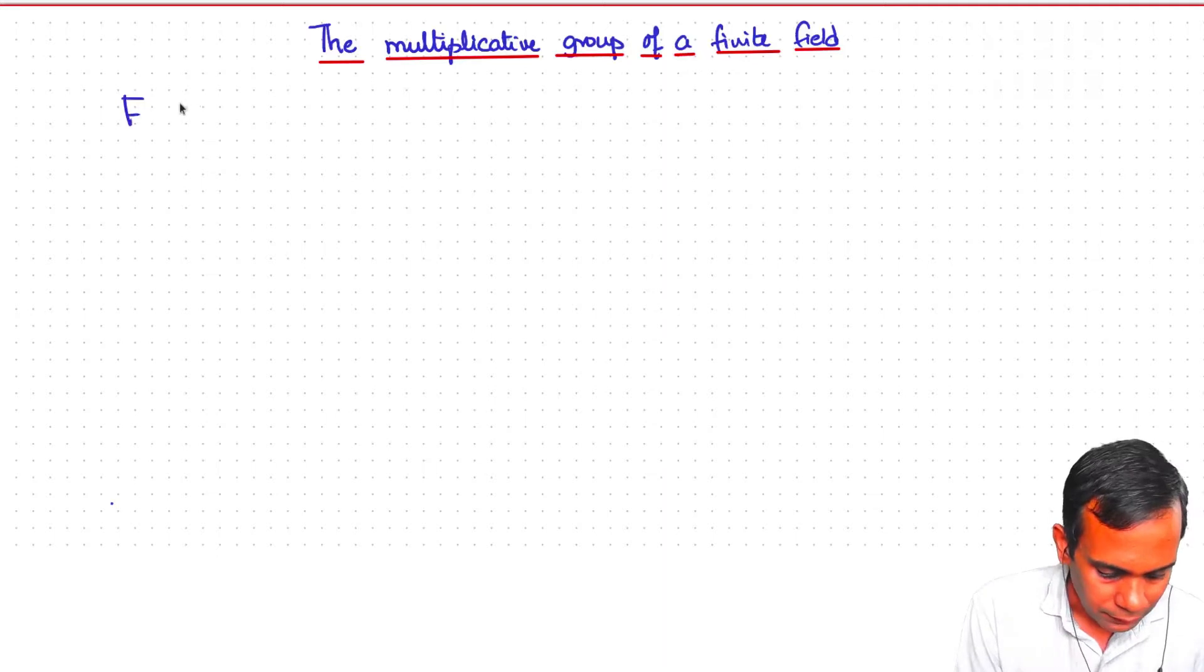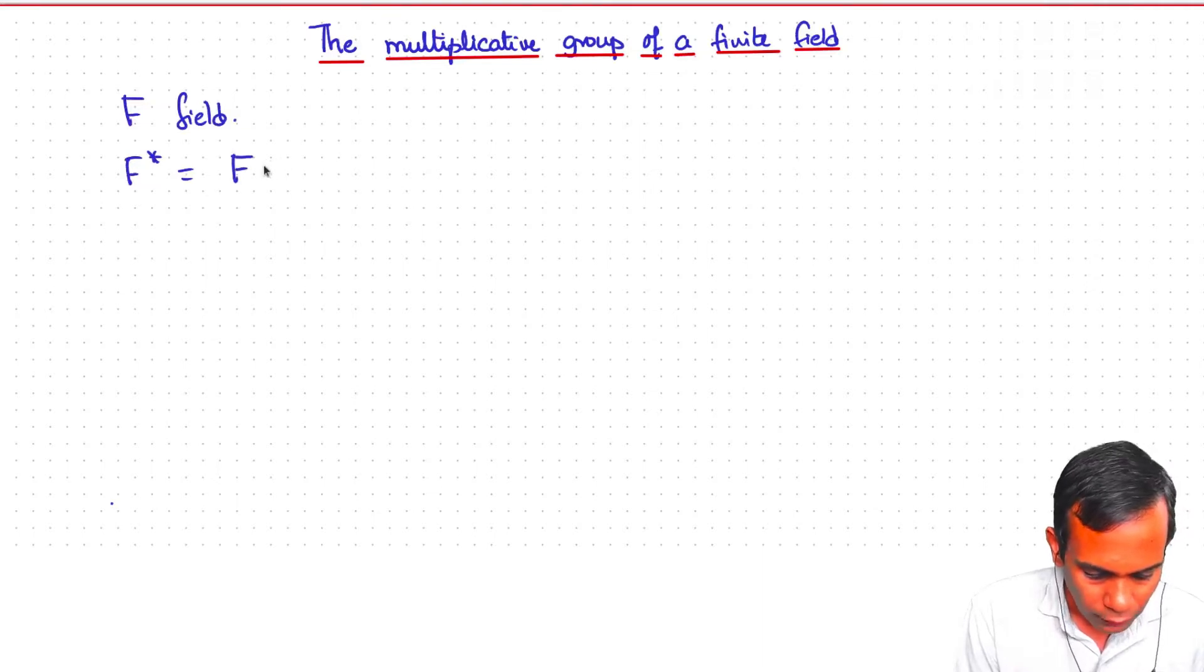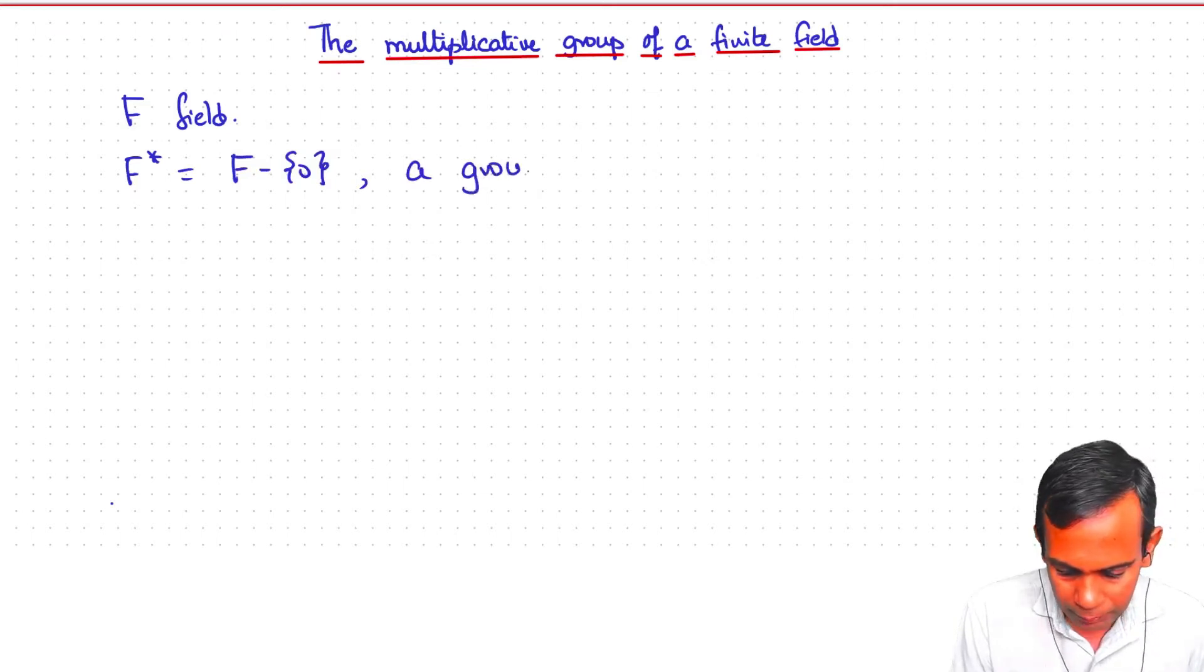Suppose F is a field. Let F star denote the set of all non-zero elements. And so, F star is a group under multiplication.